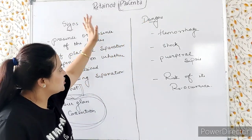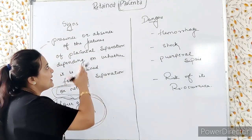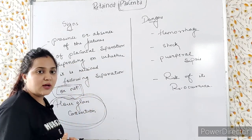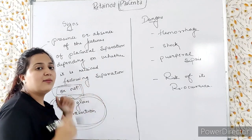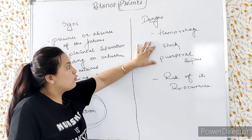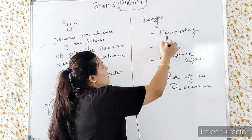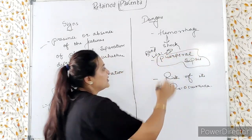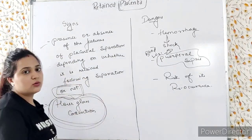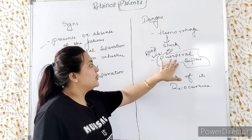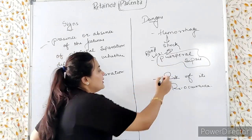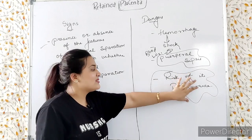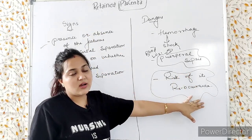The dangers of placental retention: First is hemorrhage. As long as the placenta remains adhered to the decidua and is not completely separated — fragments remain — hemorrhage will continue. Due to blood loss, shock will occur. Puerperal sepsis risk increases due to blood pooling inside the uterine cavity. Additionally, if someone has placental retention once, there is a risk of reoccurrence in the next pregnancy.